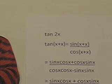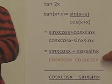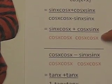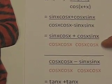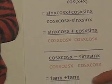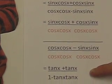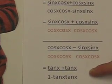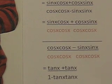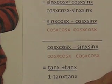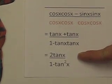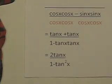Now, if you divide each part of this equation by cosine x cosine x, you will get tangent x plus tangent x over 1 minus tangent x tangent x, which is simplified to tangent 2x equals 2 tangent x over 1 minus tangent x squared.